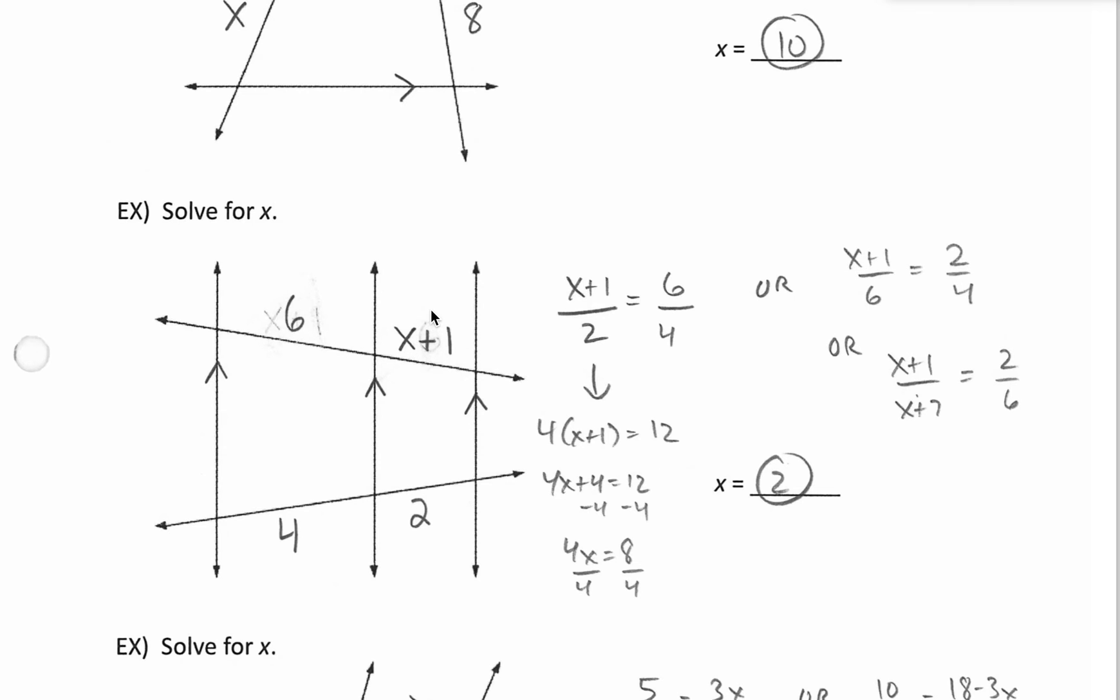We could go top to bottom on the right side. X plus 1 over 2. Then we go top to bottom on the left side. Equals 6 over 4. Either way we do it, they all work just the same. Cross multiply to solve. So we got 6 times 2. That's 12. Our other cross product though, make sure you distribute 4 times X and 4 times 1. So 4 times X is 4X. 4 times 1 is 4. Let's subtract 4 from both sides and then divide by 4 and get X is 2.